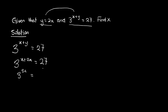So I have 3 raised to the power 3x equal to 27. I need to convert 27 into a number with base 3. 3 times 3 is 9, times 3 is 27, so 3 raised to the power 3 equals 27. Because the bases are the same — both 3 — I equate the powers. That gives 3x equal to 3.